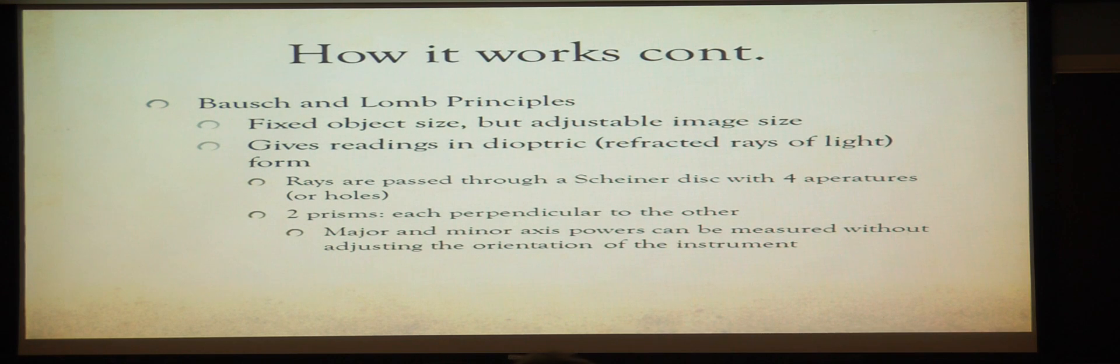Secondly, you would use the Bausch and Lomb principle, which in contrast to the Javal-Schiotz has a fixed object size and the image size is adjustable. It gives readings in refractive diopter forms, which is determined by the equation, and you would use the Scheiner disc with four apertures. It has two prisms perpendicular to each other, and the major and minor axis will be used.